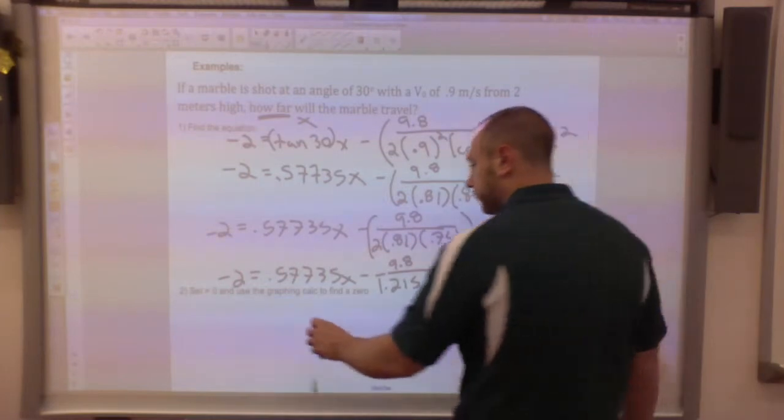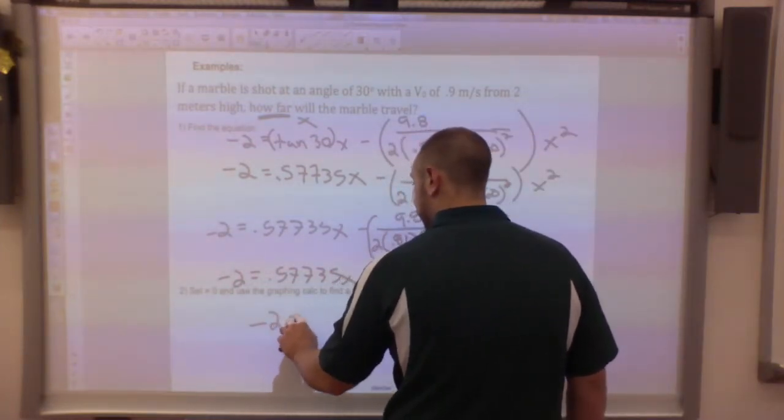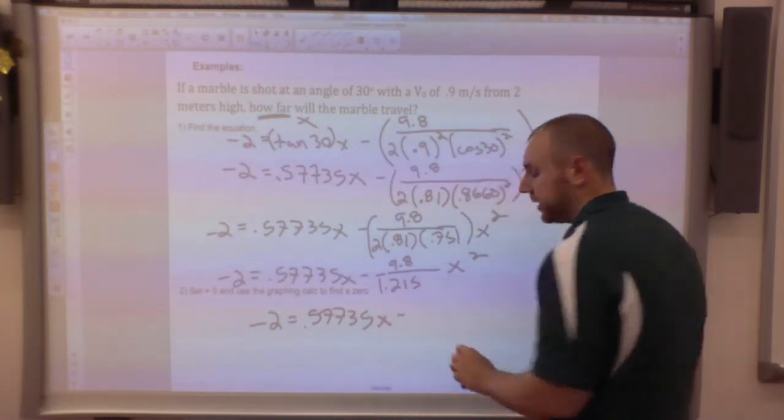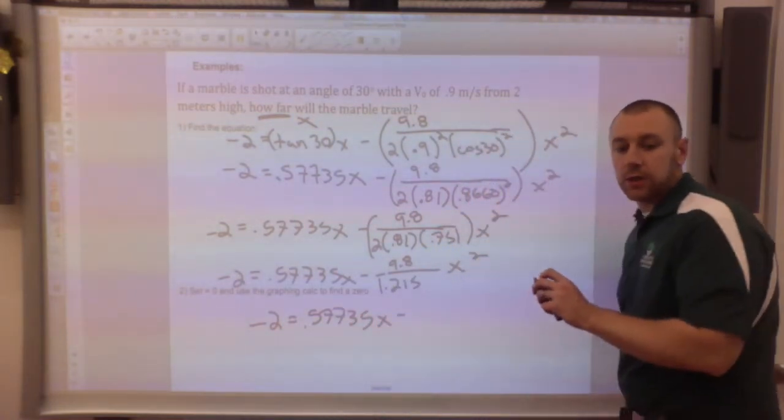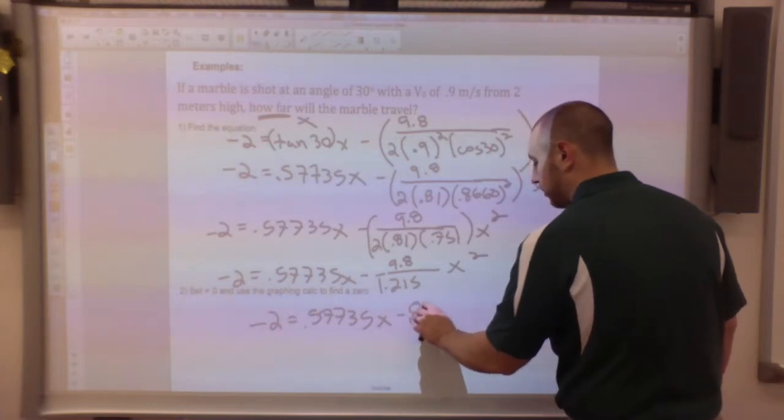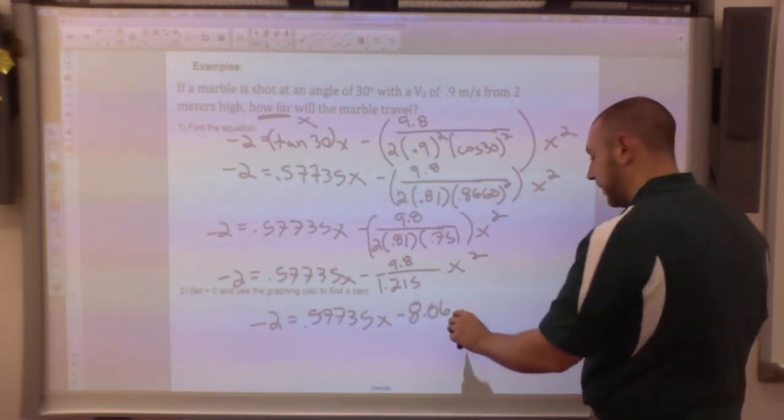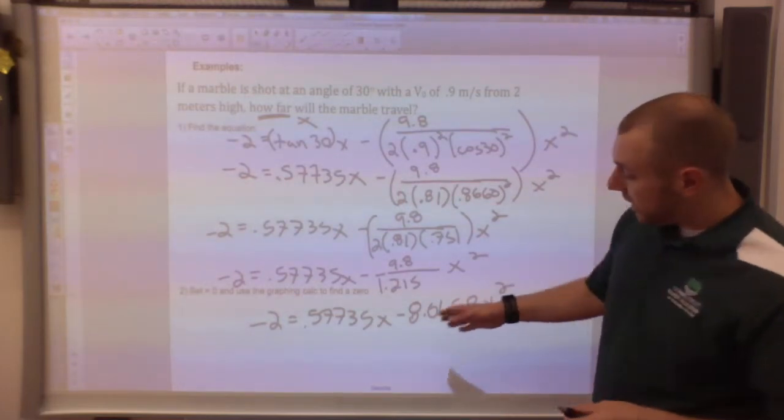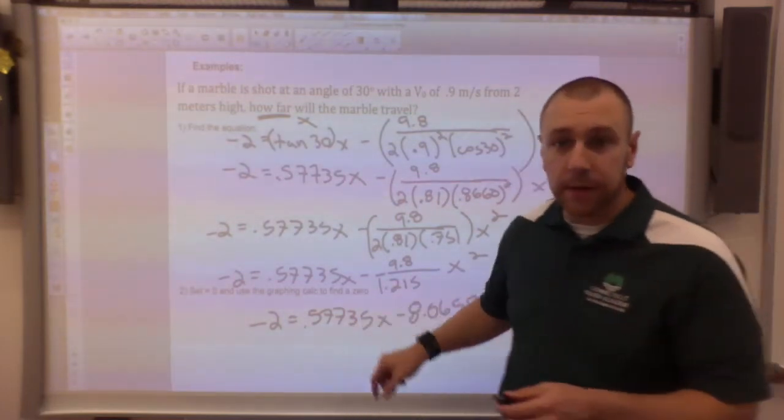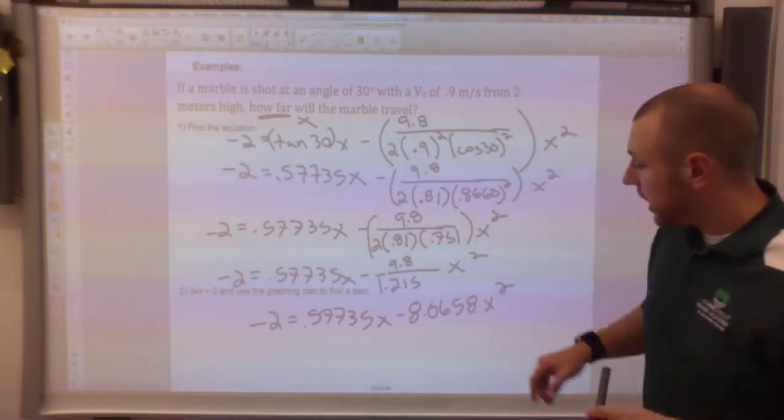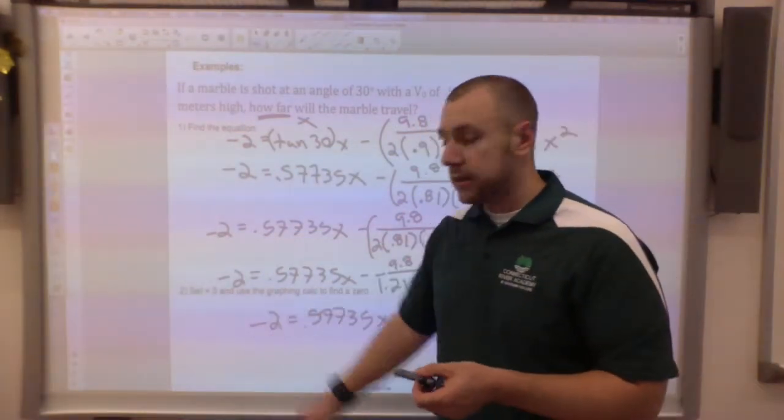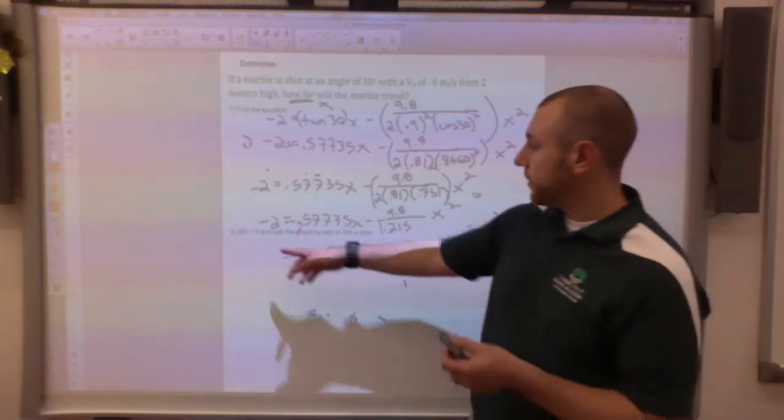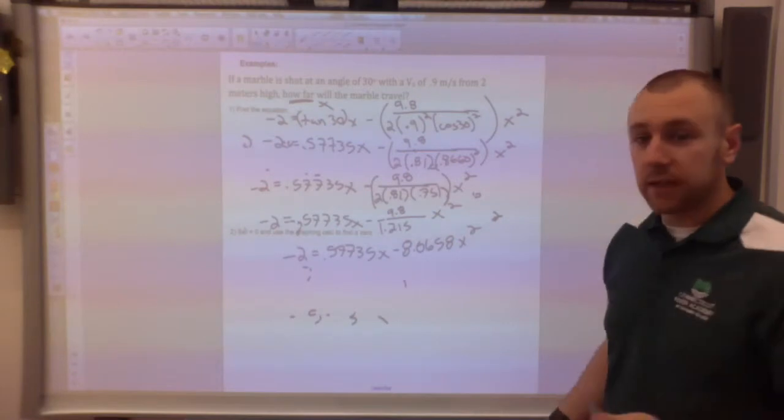I can multiply all these numbers together so negative 2 equals 0.57735 x minus 9.8 over 2 times 0.81. I multiplied all those together and I get 1.215 x squared, and then divide those out. Negative 2 equals 0.57735 x minus 8.0658 x squared.